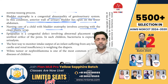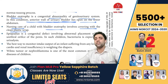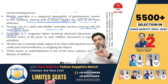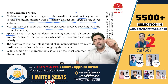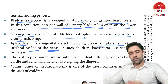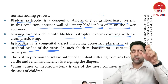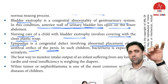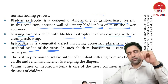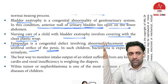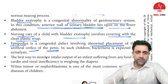Nursing care for bladder exstrophy involves covering the exposed anterior bladder wall with a clean plastic wrap — you never leave any defect open. Epispadias means the urethral orifice is abnormally placed. If the stream comes from below, it is hypospadias; if from above, it is epispadias; normal direction is anterior.